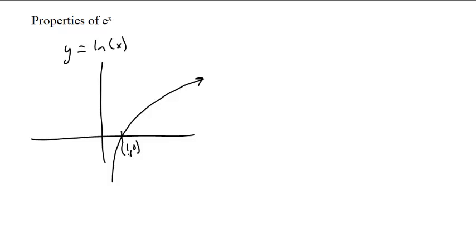If y equals ln of x looks like this, going through the point one, zero, that's the main point that we know. It's a one-to-one function, therefore it has an inverse. Its inverse is going to look something like this, y equals e to the x, and it's going to go to the point zero, one.